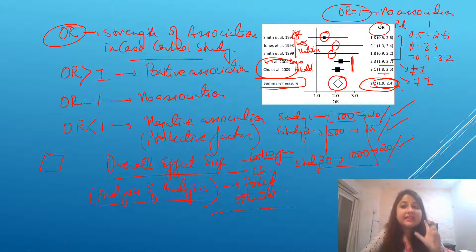It is definitely significant because this interval does not include one. Am I clear? This is how you interpret a forest plot which is used to graphically represent overall effect size or pooled estimate in a meta-analysis. So you should know how to read these individual studies and also about overall summary measure.